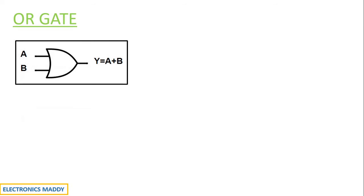Hello everyone. In order to understand the ladder diagram for OR gate, we need to first know how does an OR gate operate. This is the logical symbol of two input OR gate where Y is given as A plus B.